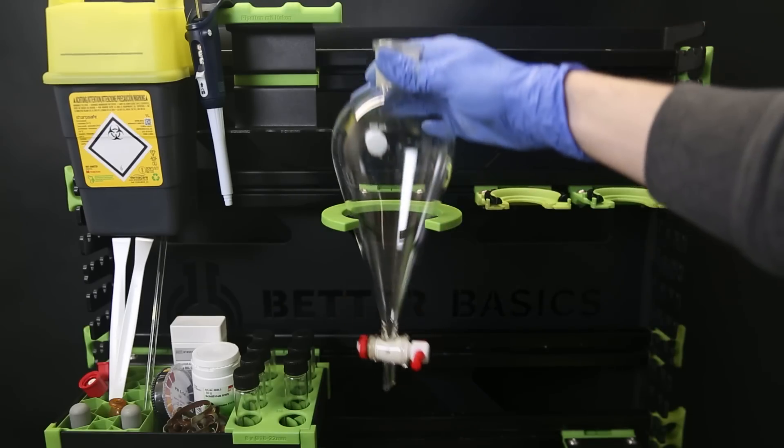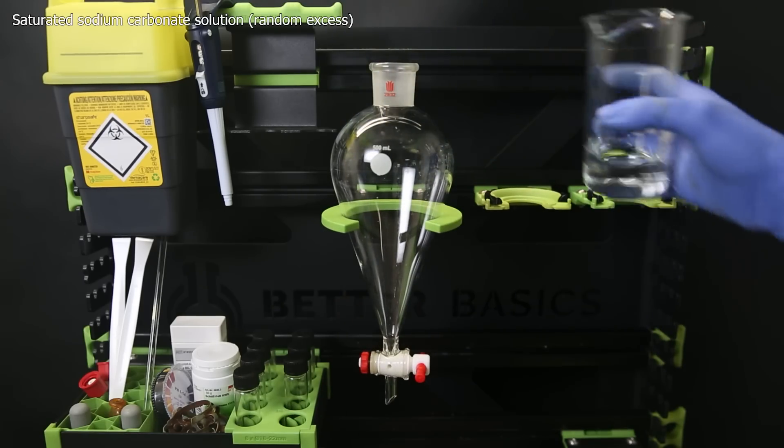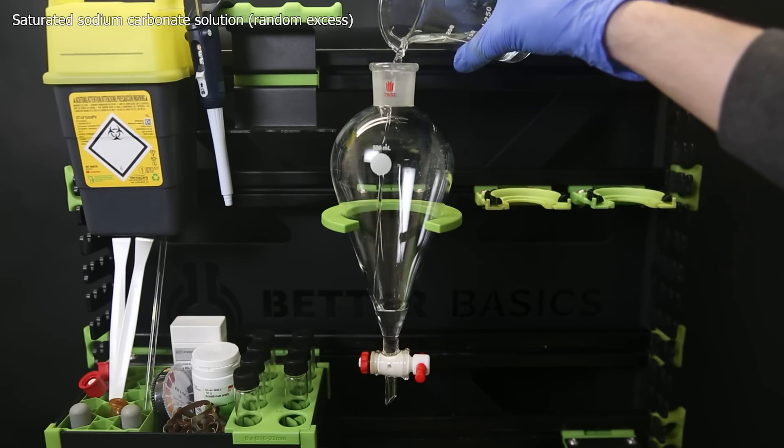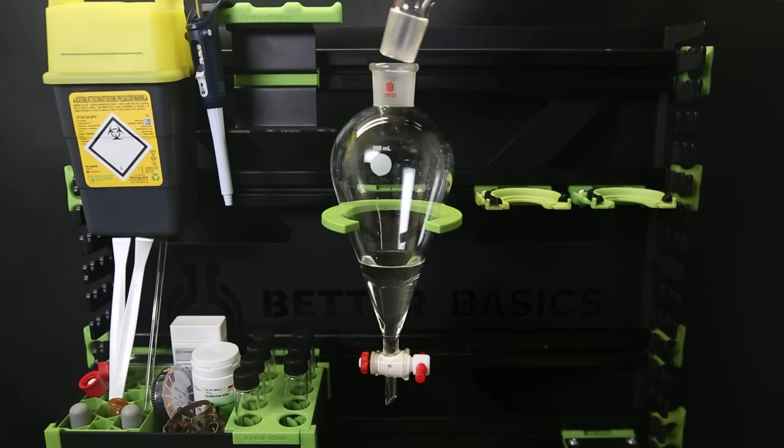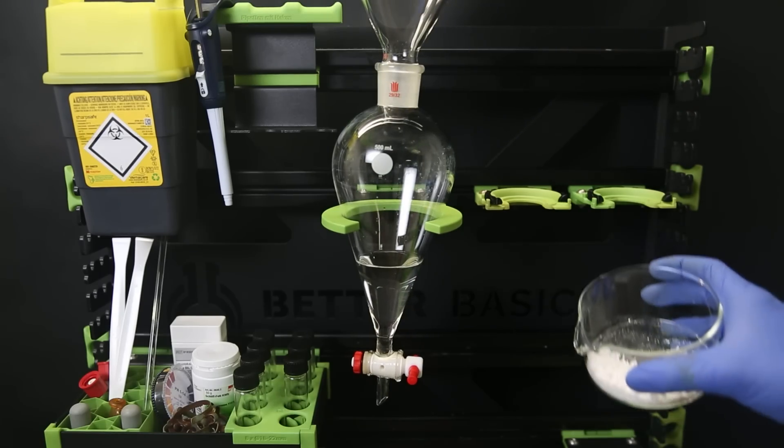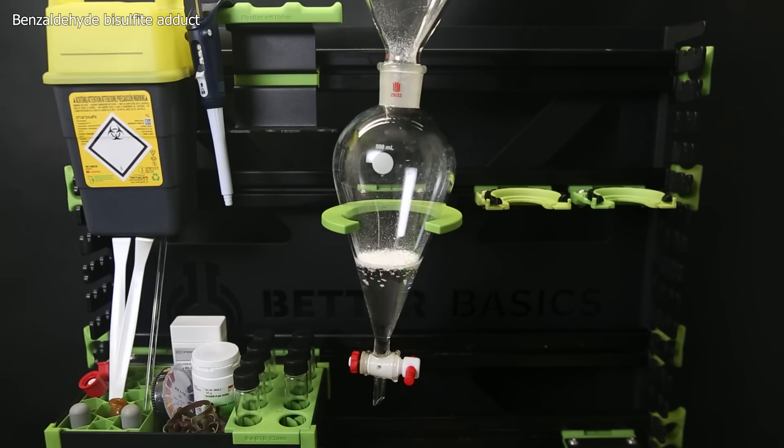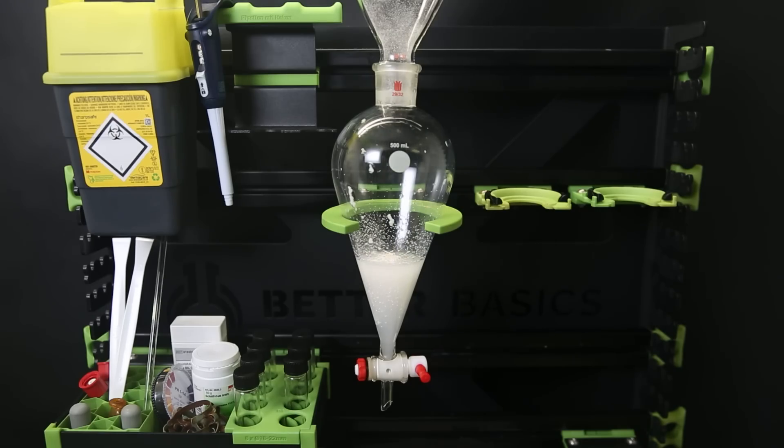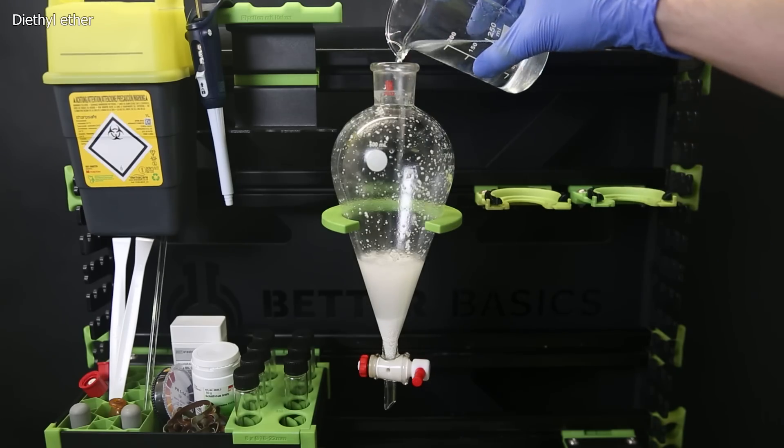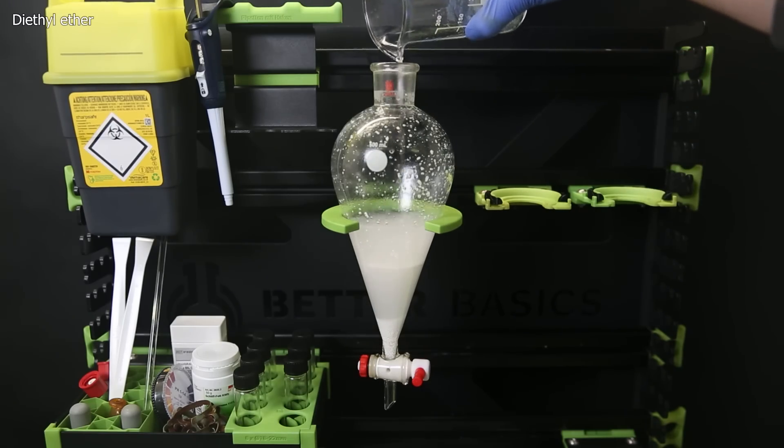Moving on with the next step, where we destroy the bisulfite adduct to return the benzaldehyde. So I set up a separatory funnel again and add in a saturated solution of sodium carbonate. I then add in all of the bisulfite adduct. I shake it strongly and add some more sodium carbonate because he did it too. I also add some diethyl ether to already start extracting the benzaldehyde.